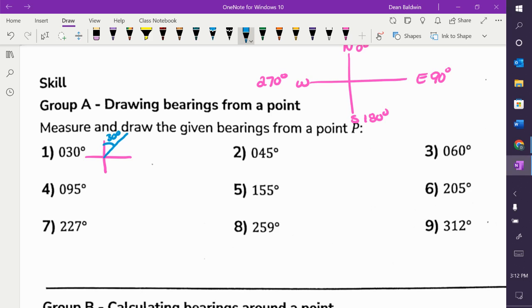Because it's always from north. So if you're at north, I say go on a bearing of 30 degrees, you aim your plane, your boat, or whatever, and then this is 30.